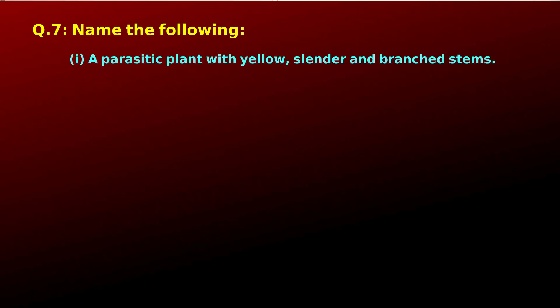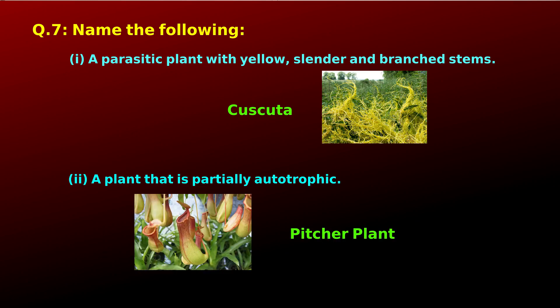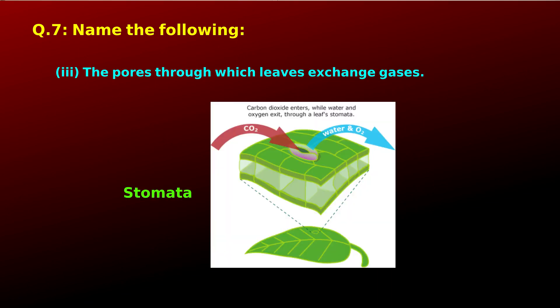Question 7 — Name the following. A parasitic plant with yellow, slender, and branched stem: the answer is Cuscuta. A plant that is partially autotrophic: the answer is pitcher plant. The pores through which leaves exchange gases: the answer is stomata.